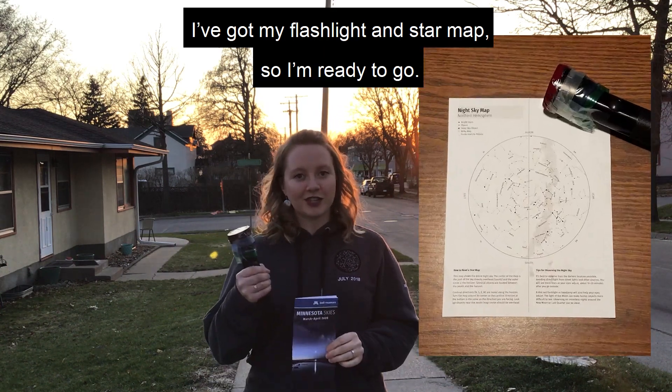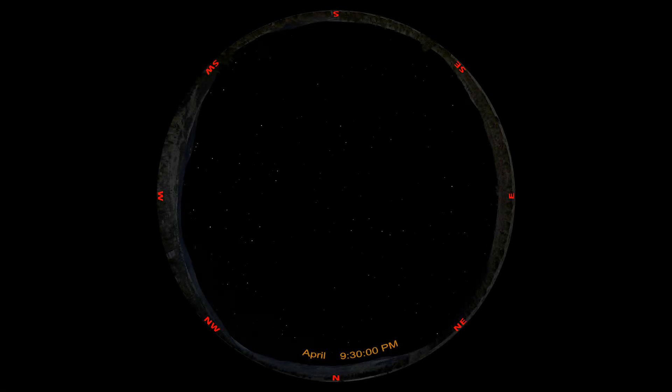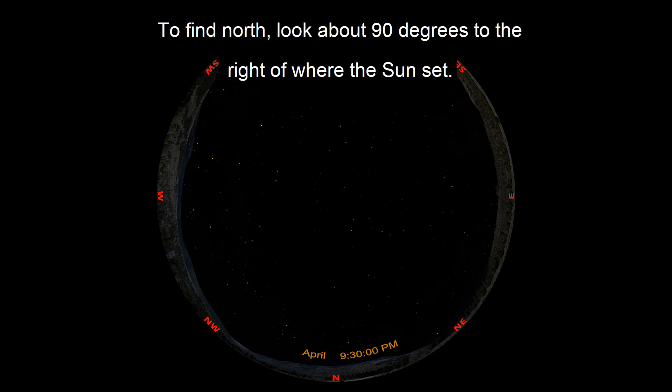So I've got my flashlight and my star map, so I'm ready to go. We're going to start by looking towards the north. To find north, look about 90 degrees to the right of where the sun set.